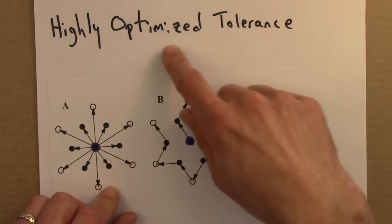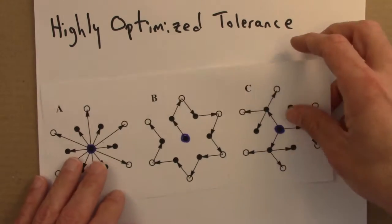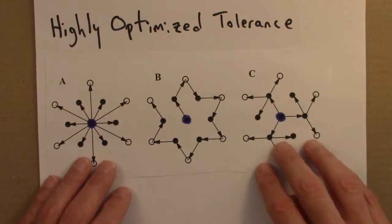So tolerance, how is tolerance being used in this setting? Well the idea is tolerance to some sort of random failure.